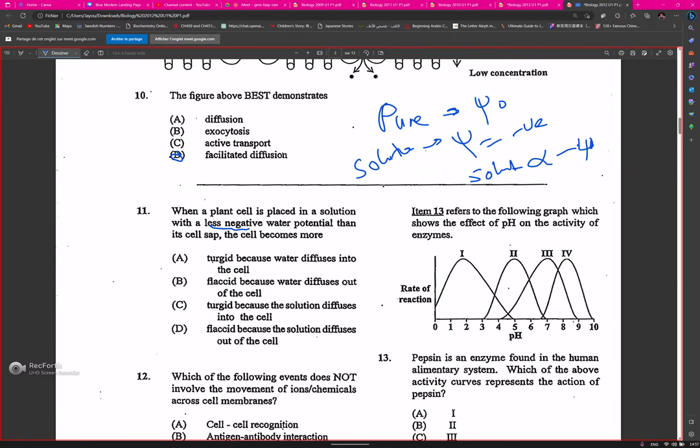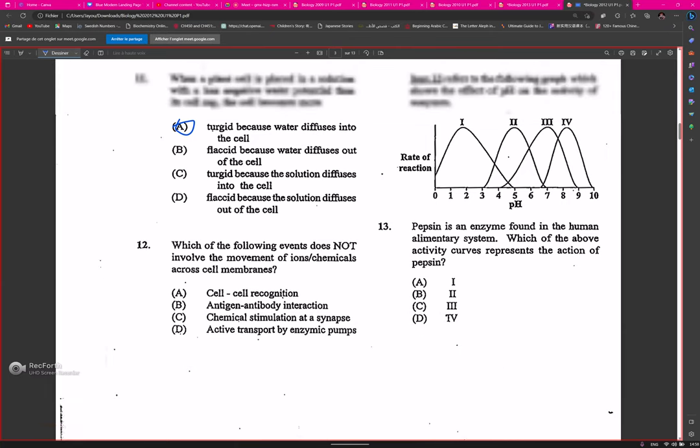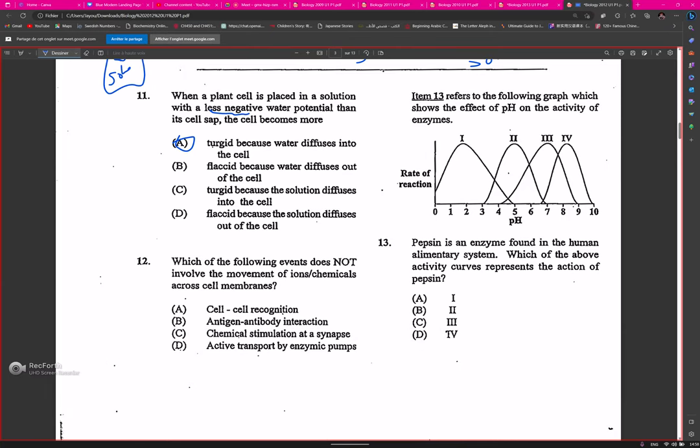Here we have a less negative water potential, so the water potential is more positive, a purer water potential than what is in the cell. If the water outside is purer than the solution inside the cell, where is the water going to move? Into the cell. And if it moves into the cell, what is the cell going to become? Turgid, beautiful. I hope I didn't put other answers for other papers, but I'll change them if I do.